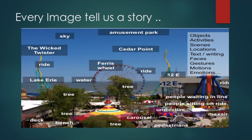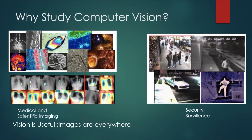Every image tells a story. In this image you can see different objects — millions of features in a single image. You can have objects, activities, scenes, location, text, facial gestures, motions, people sitting on a ride, umbrella, carousel, trees — so many things that tell us a lot. We want to identify specific features in this image, and that can be done using OpenCV techniques. The question arises: why study computer vision?